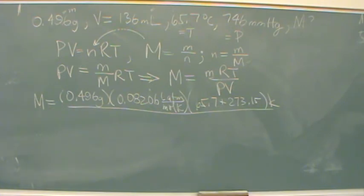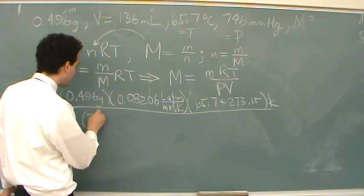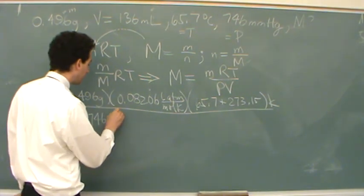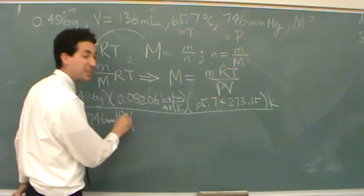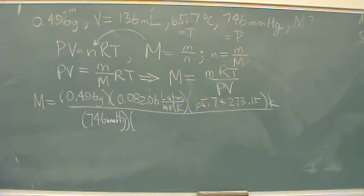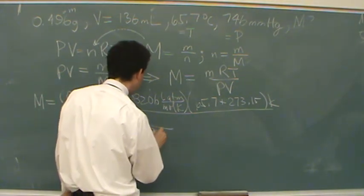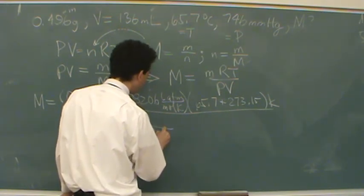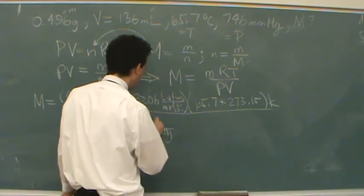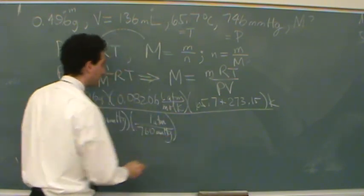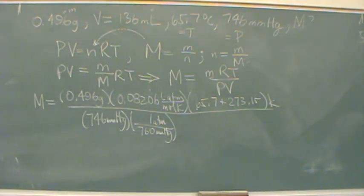And then divided by P and V. P is 746 millimeters of mercury. Again, you should know how to convert between the pressures. So we want atmospheres, again, to follow R. So it's 760 millimeters of mercury for one atmosphere. There's pressure in the right units.